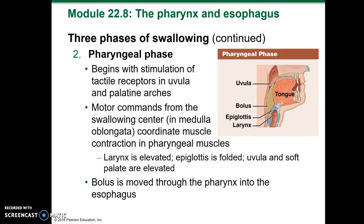The pharyngeal phase begins with stimulation of the tactile receptors in the uvula and the palatine arches. Motor commands from the swallowing center in the medulla oblongata coordinate muscle contraction in the pharyngeal muscles. The larynx is elevated, the epiglottis is folded, and the uvula and soft palate are elevated. The bolus is then moved through the pharynx into the esophagus.